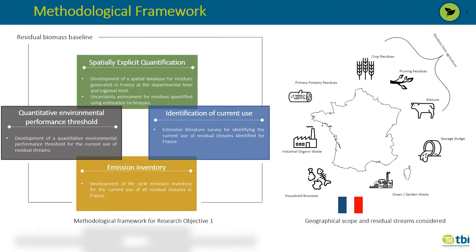To develop the residual biomass baseline, we followed a four-step framework. The first step was to develop a spatial database of residual biomass streams for France. The second step identified the current use of these residues through extensive literature surveys and expert consultations. The third step was developing an emission inventory and life cycle inventories, and finally we performed life cycle analysis to study their environmental impacts.